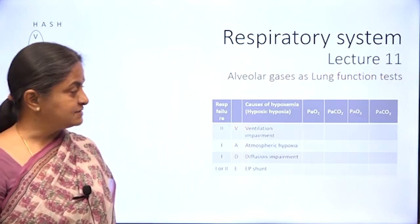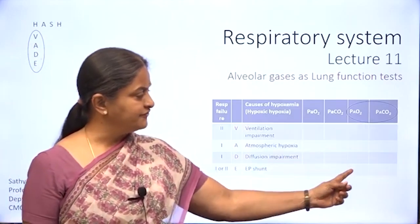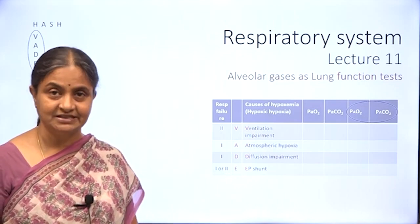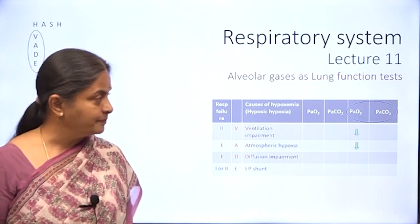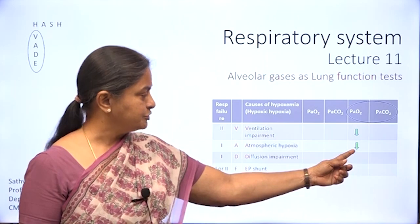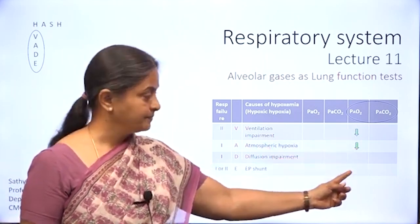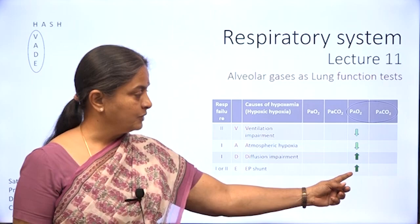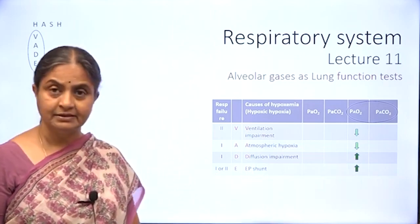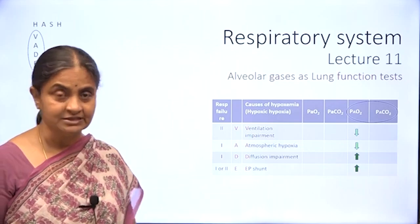Alveolar gases can help us differentiate between the different pathological states in the lung. Alveolar oxygen is lower in two conditions — there is alveolar hypoxia — while it is higher in diffusion impairment and the last condition.